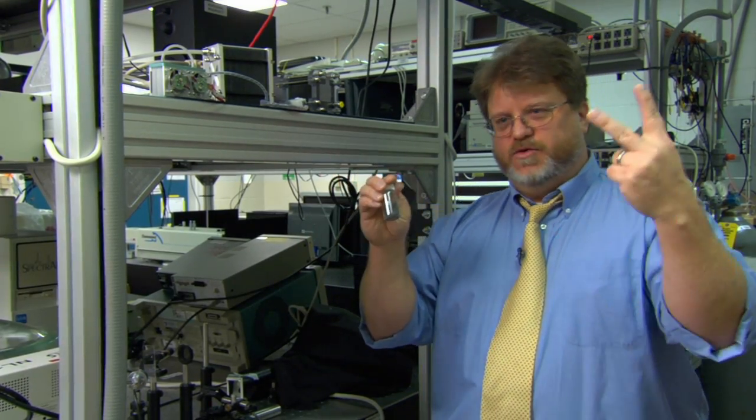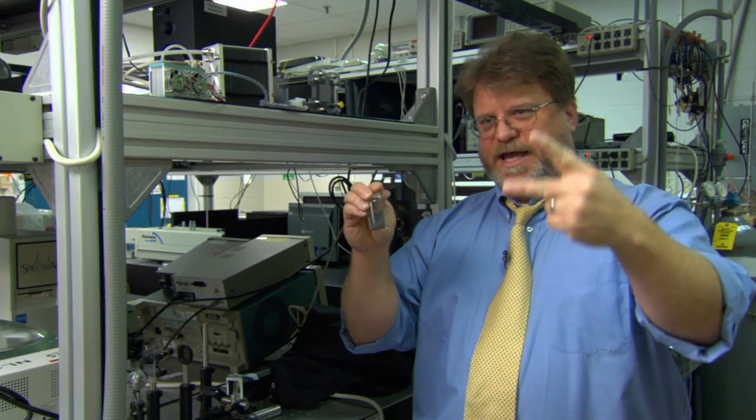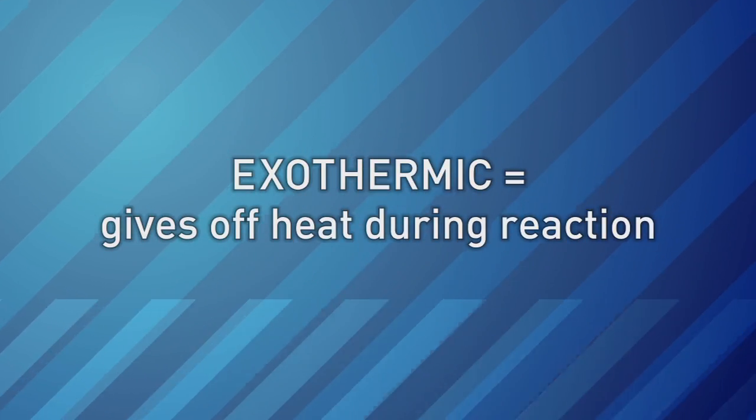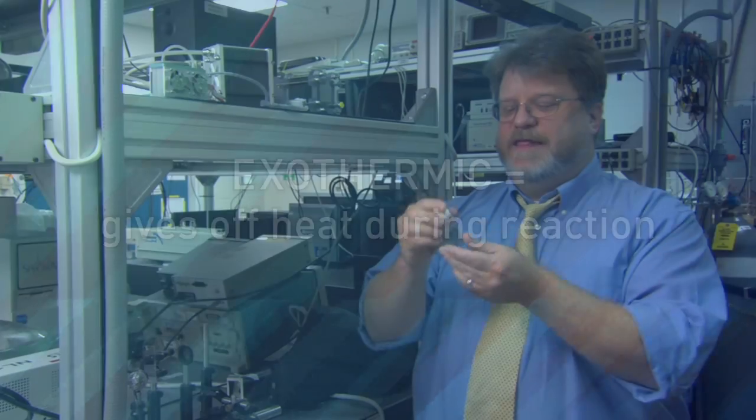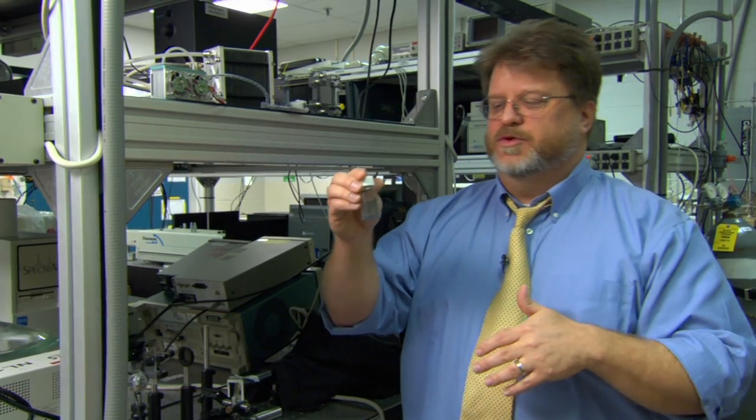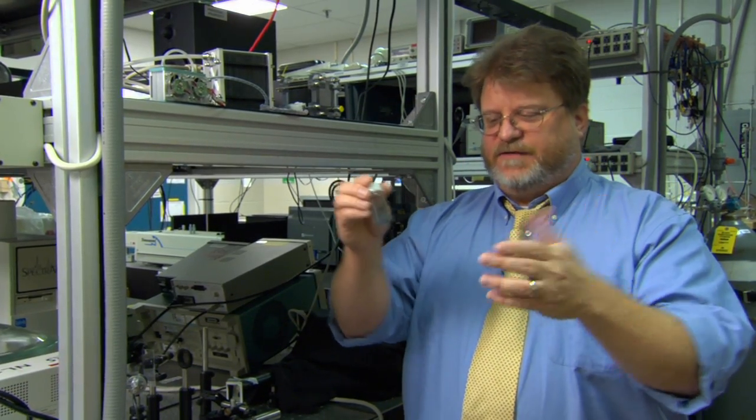The reaction is extremely exothermic. What that means is you have exothermic reactions and endothermic. Endothermic takes heat to make the reaction go. Exothermic gives off heat when the reaction goes. This gives off lots of heat. If you want the number, it's 31 kilojoules per gram for aluminum to go to aluminum oxide.